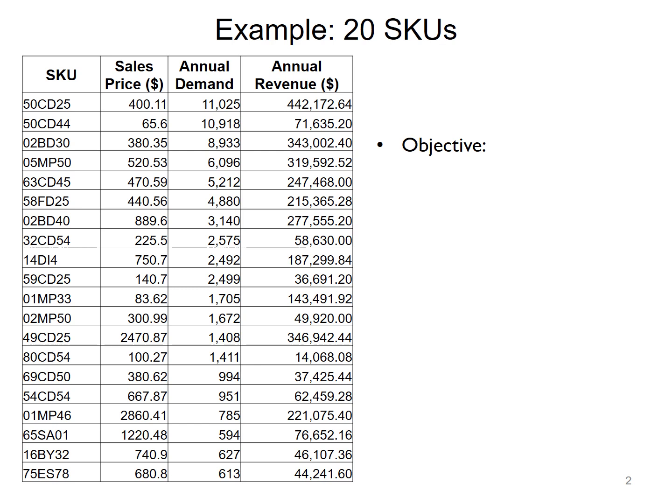So when we have this set of SKUs and if you want to perform an ABC analysis you got to kind of think about what the objective is. So the objective is to identify the SKUs that management should prioritize time and resources.